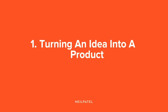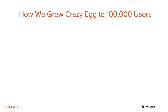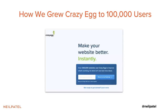So step one: turning an idea into a product. We have this company called Crazy Egg, and we grew it to 100,000 users. Crazy Egg is a heat map software — it shows you how people engage and interact with your website. It has a lot more features now, like mouse recording and mouse movement tracking, to show you where people are getting stuck on your website, what you need to fix, so you can maximize your conversion rate and improve usability.